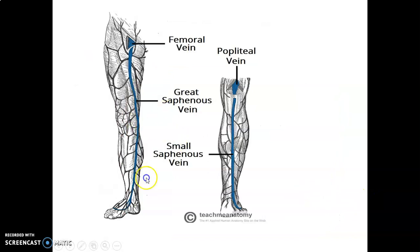Regarding the saphenous vessels: the great saphenous vein arises from the dorsal venous arch medially, via the medial marginal vein. It passes anterior to the medial malleolus, ascends on the medial aspect of the leg, then posterior-medial to the patella, and ascends anteromedially in the thigh to terminate by piercing the cribriform fascia to enter the femoral vein. The small saphenous vein arises from the dorsal venous arch laterally, passes posterior to the lateral malleolus and up the posterior aspect of the leg, then pierces the popliteal fascia to empty into the popliteal vein.